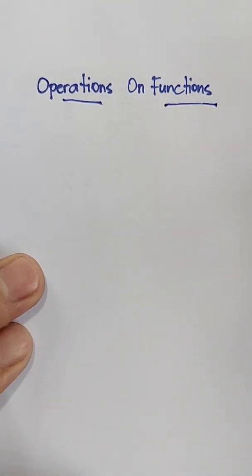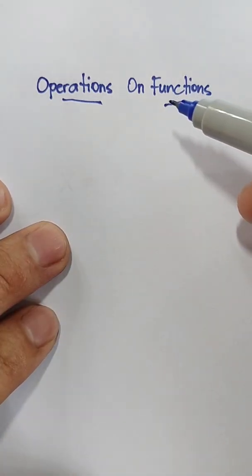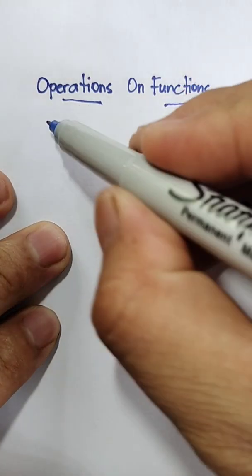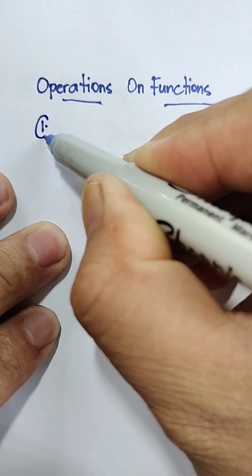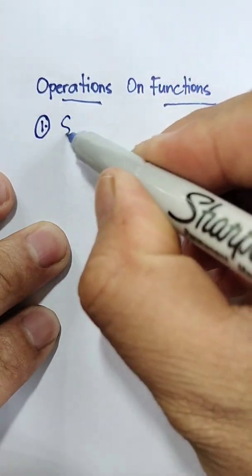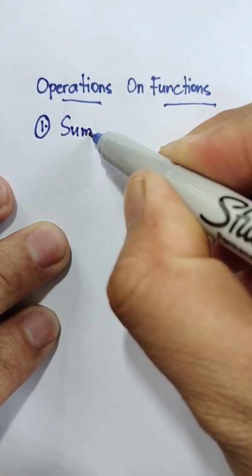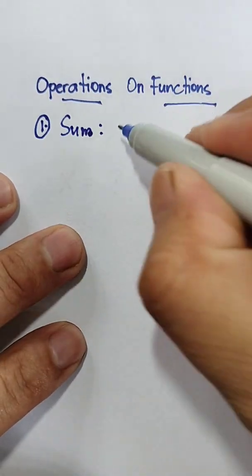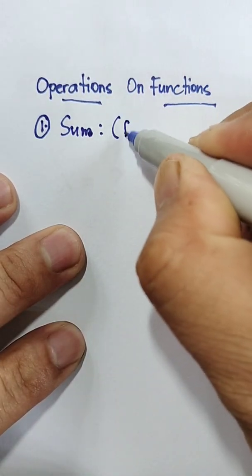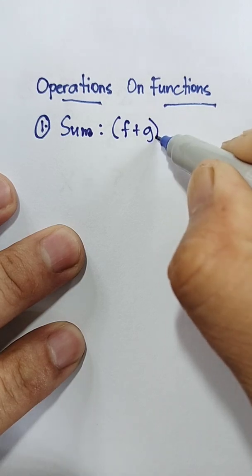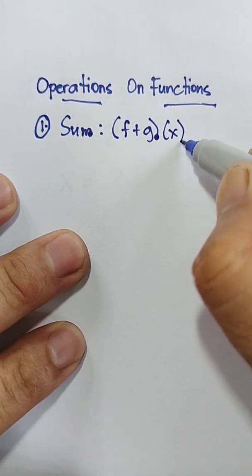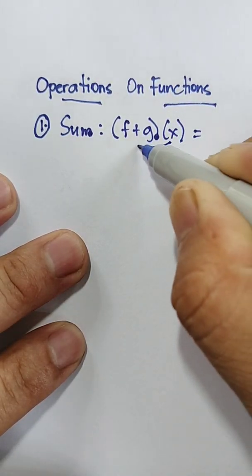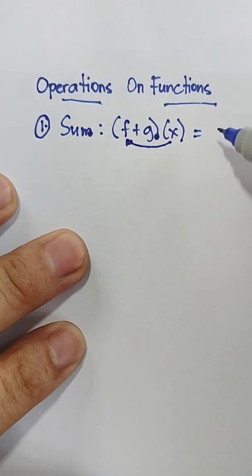There are four fundamental operations of mathematics. Number one, in operations on functions, we have sum, and the formula in finding the sum of functions is the quantity of f plus g times x equals, distribute the x, so we have f of x plus g of x.